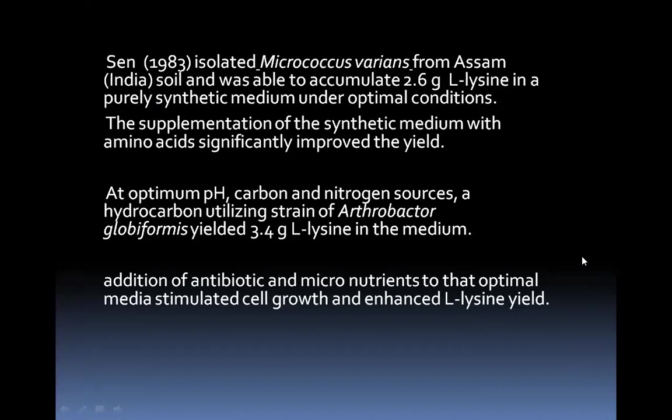Sen in 1983 isolated Micrococcus variants from Assam soil and was able to accumulate around 2.6 grams per liter in purely synthetic medium under optimal conditions, compared to 3.4 grams in other organisms. Supplementation of the synthetic medium with amino acids significantly improved yields. A hydrocarbon-utilizing strain of Arthrobacter globiformis yielded 3.4 grams of lysine per liter, but on a commercial scale the preferred organism is Corynebacterium glutamicum. Excess of leucine inhibited synthesis of lysine, so a leucine auxotroph was used. Excess biotin favored lysine accumulation.